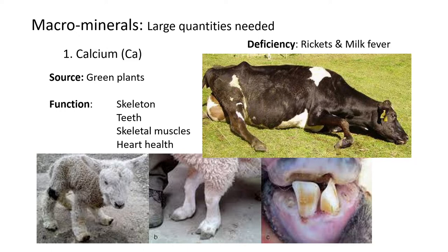A good source of calcium is any green plants — your photosynthesizing plants usually have calcium. The function of calcium is for strong bones, for the skeleton, strong teeth, for muscles and muscle building, and also for good heart health.